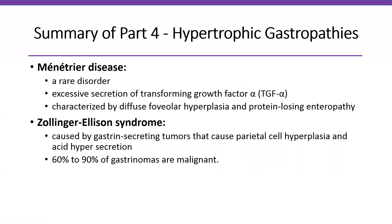Summary of part four — hypertrophic gastropathies. The two well-defined disorders are Menetrier disease and Zollinger-Ellison syndrome. Menetrier disease is a rare disorder characterized by excessive secretion of transforming growth factor alpha, diffuse foveolar hyperplasia, and protein-losing enteropathy. Zollinger-Ellison syndrome is caused by gastrin-secreting tumors that cause parietal cell hyperplasia and acid hypersecretion. 60 to 90% of these gastrinomas can be malignant.